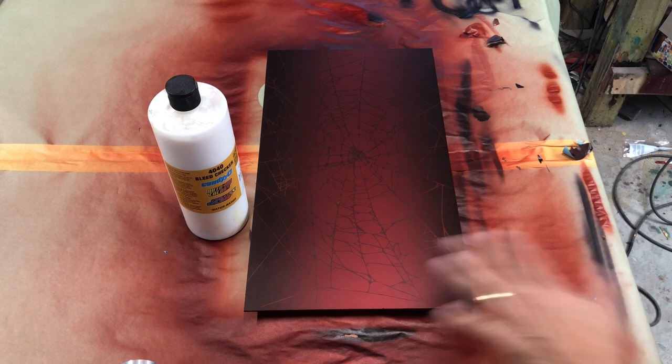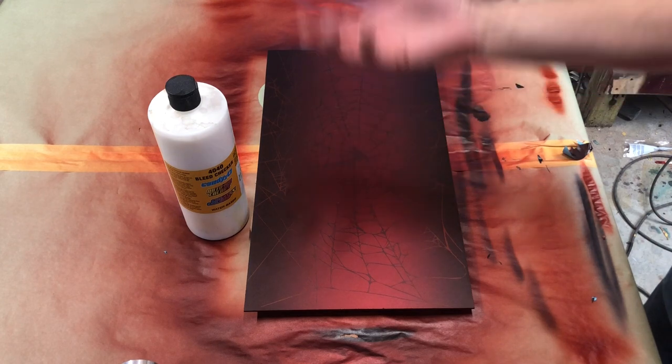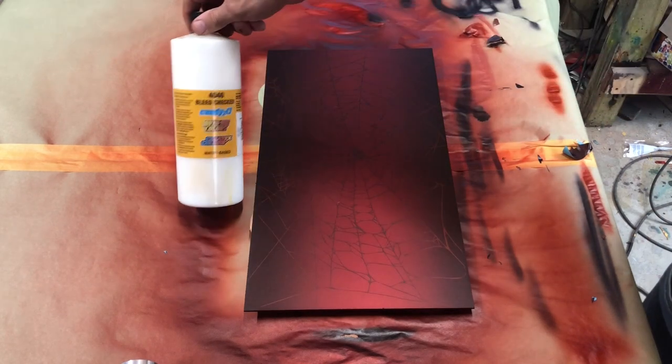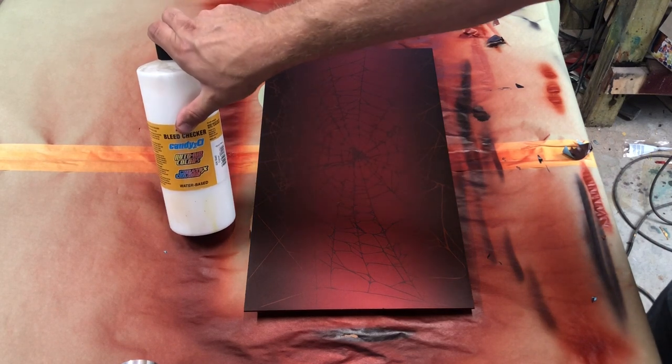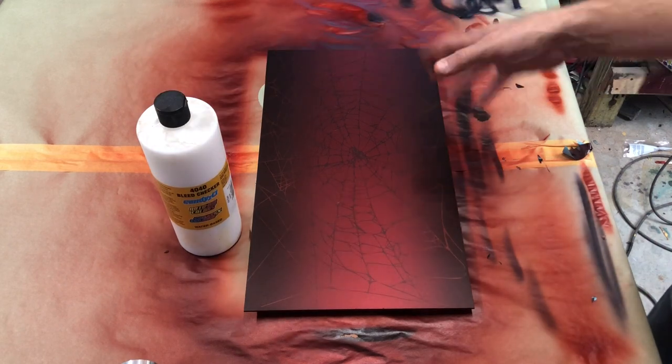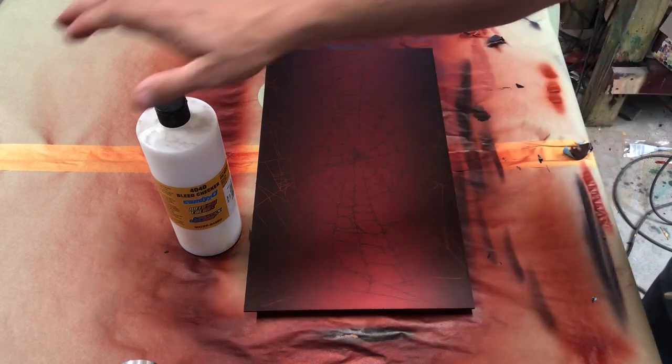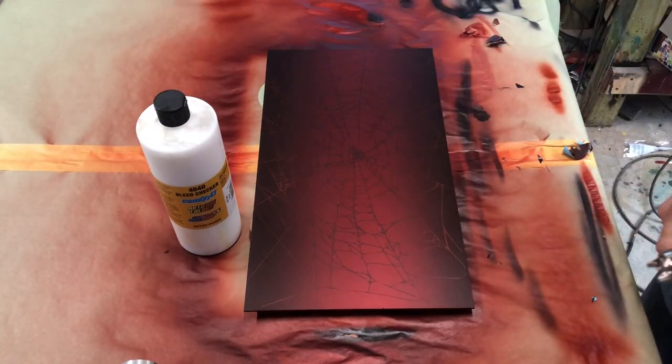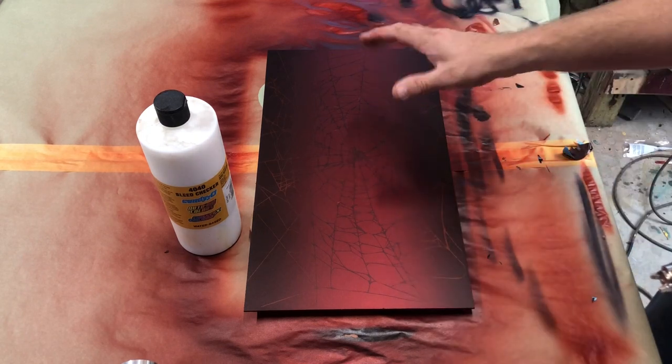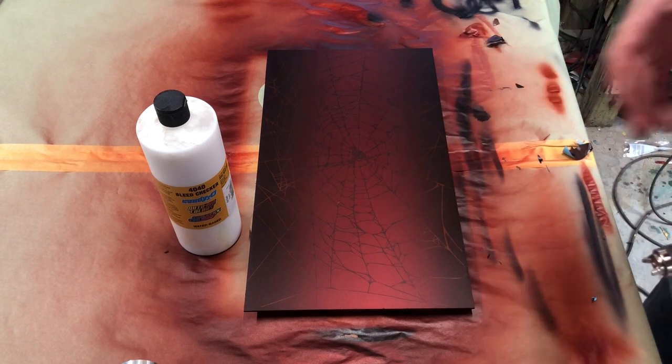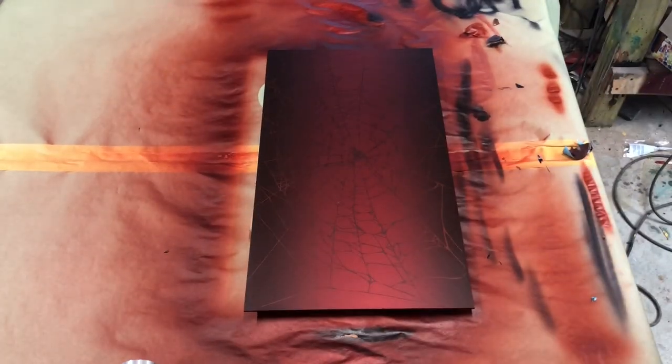Time for the next phase. This is all candied in. Now I'm going to seal it up. Because this is candy, we want to put a bleed check sealer on top of it. Createx has made the 4040 bleed check sealer. This is going to go on top of anything with heavy amounts of candy in it. That way when you're doing white or opaque artwork on top, the dyes don't leach back into the artwork.